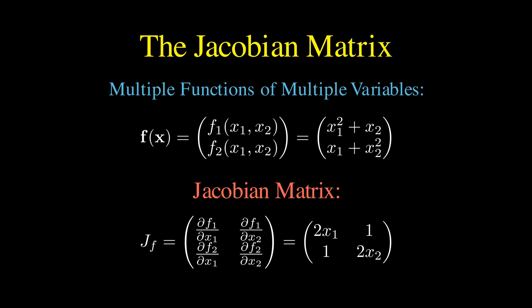These four derivatives form a two-by-two matrix that we call the Jacobian matrix, denoted as j subscript f, which contains all the local linear approximation information about how our vector valued function behaves.